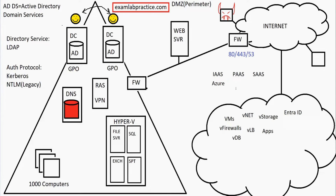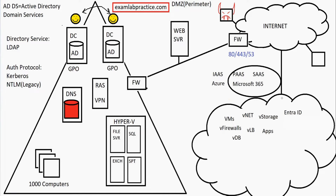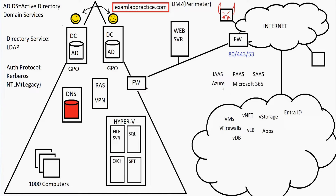Microsoft's main Platform as a Service and Software as a Service functions are found in something called Microsoft 365. There are really two parts to the Microsoft cloud service: there's Azure, which is mostly focused on the IaaS side, and Microsoft 365, which is mostly geared towards Platform as a Service and Software as a Service. These two are very related — Microsoft 365 sits on top of Azure. You can't have Microsoft 365 without Azure, and if you create an Azure account it will allow you to automatically create a Microsoft 365 account.